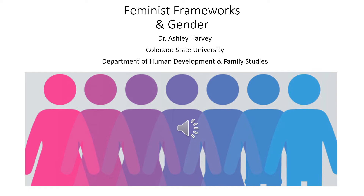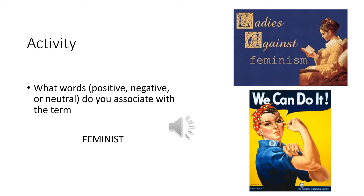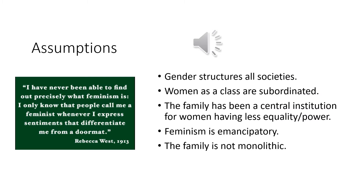Let's get started on our last theoretical framework: feminist frameworks and gender. Stop and think about what words you associate with feminism — positive words, negative words, neutral words. The point of this activity is to illustrate that although the term feminist is controversial in our overall society, it really isn't controversial in the field of family studies anymore. It was when it emerged in the early 80s, maybe even into the 90s, but now it's an established framework from which to view the family.